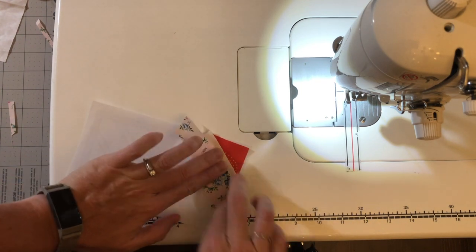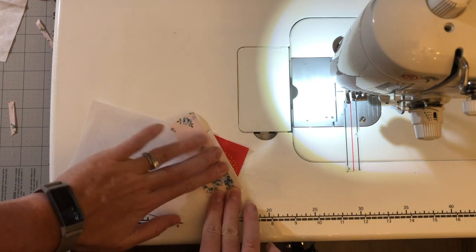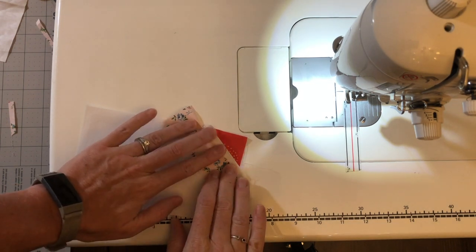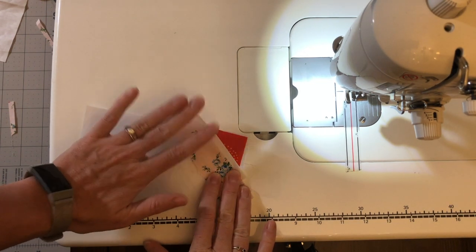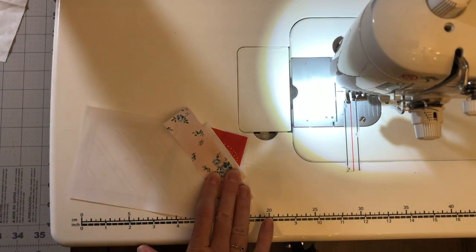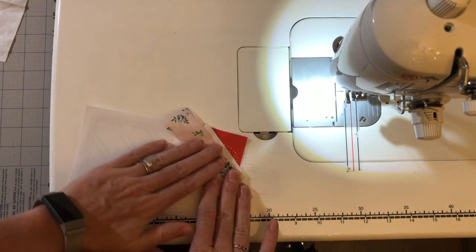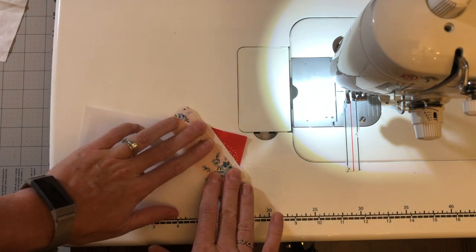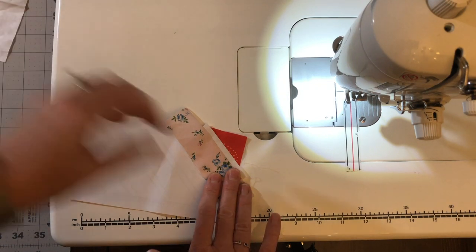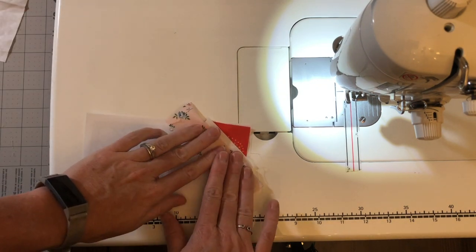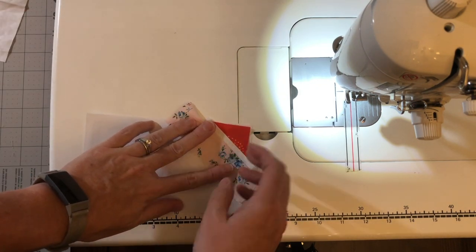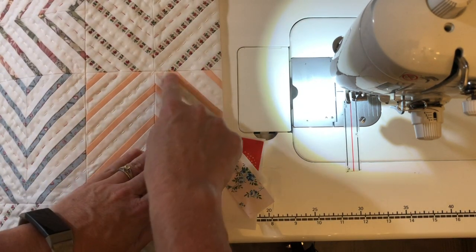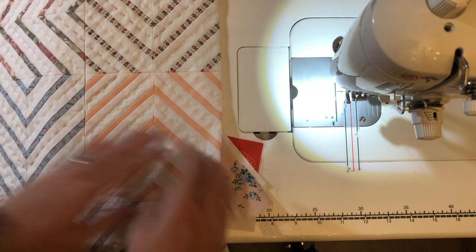I've had a couple people ask me in the past, could you just traditionally piece this block? And the answer is, I mean, yes, in theory you could, but these are such skinny strips. And the alignment is so key to this pattern, to making the maze blocks line up at the end, that the foundation paper piecing really ensures that your blocks are extremely accurate. They are going to measure right as they should measure. And when you put them all together, your lines are going to line up from block to block and give you this really cool maze effect.